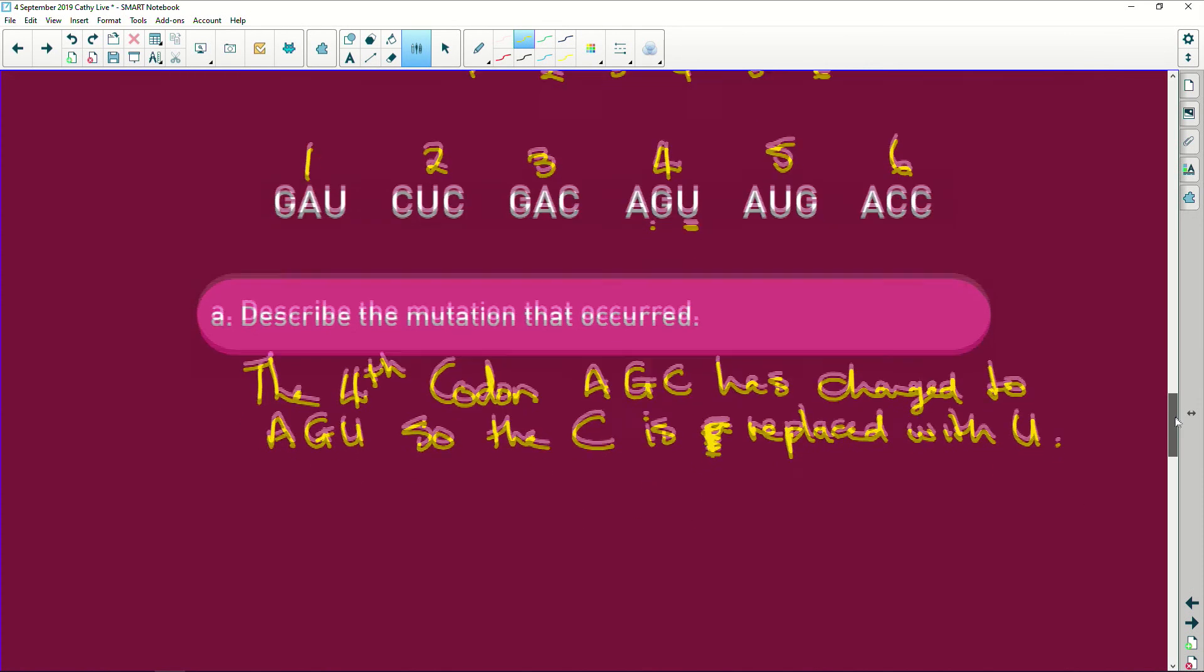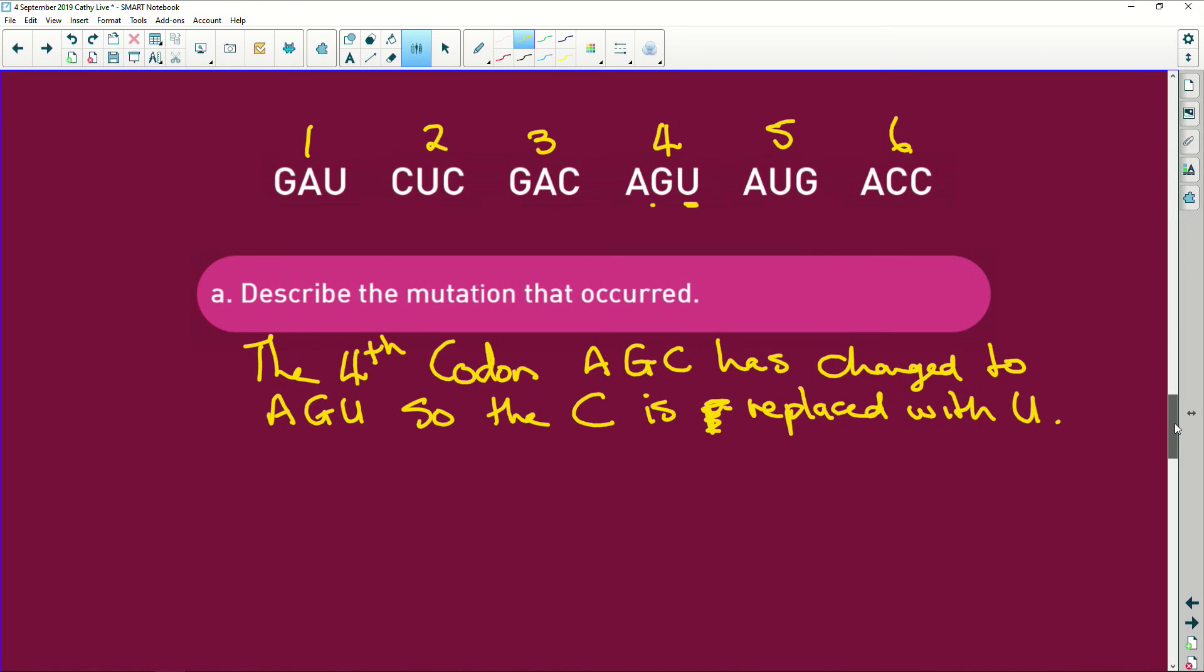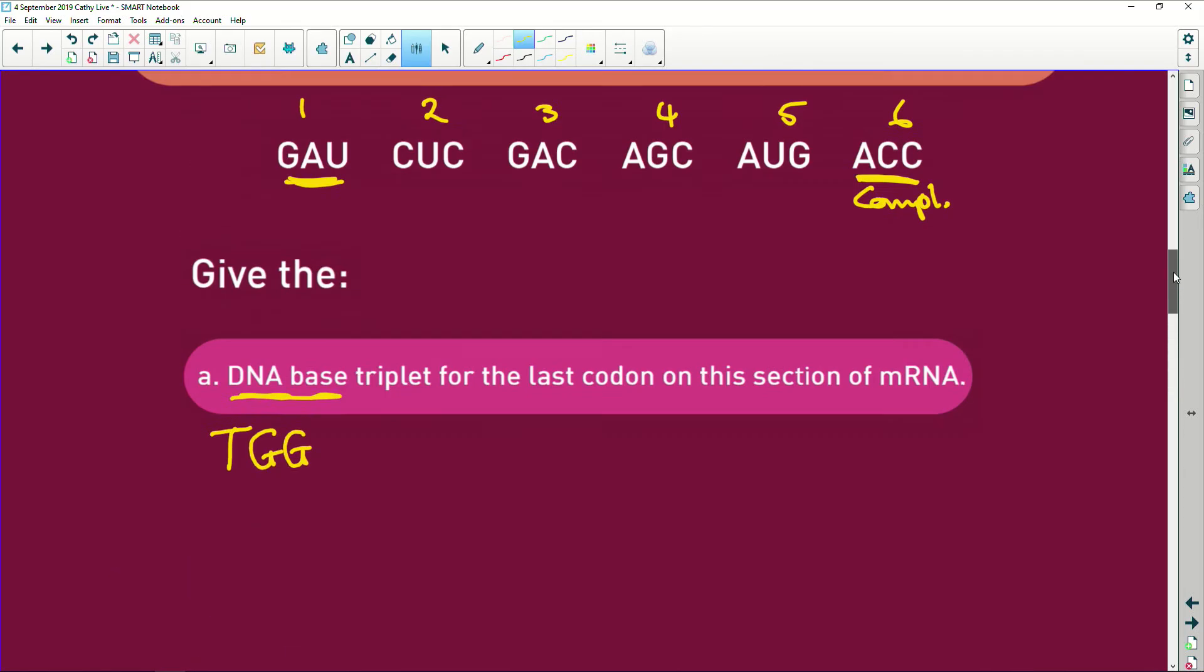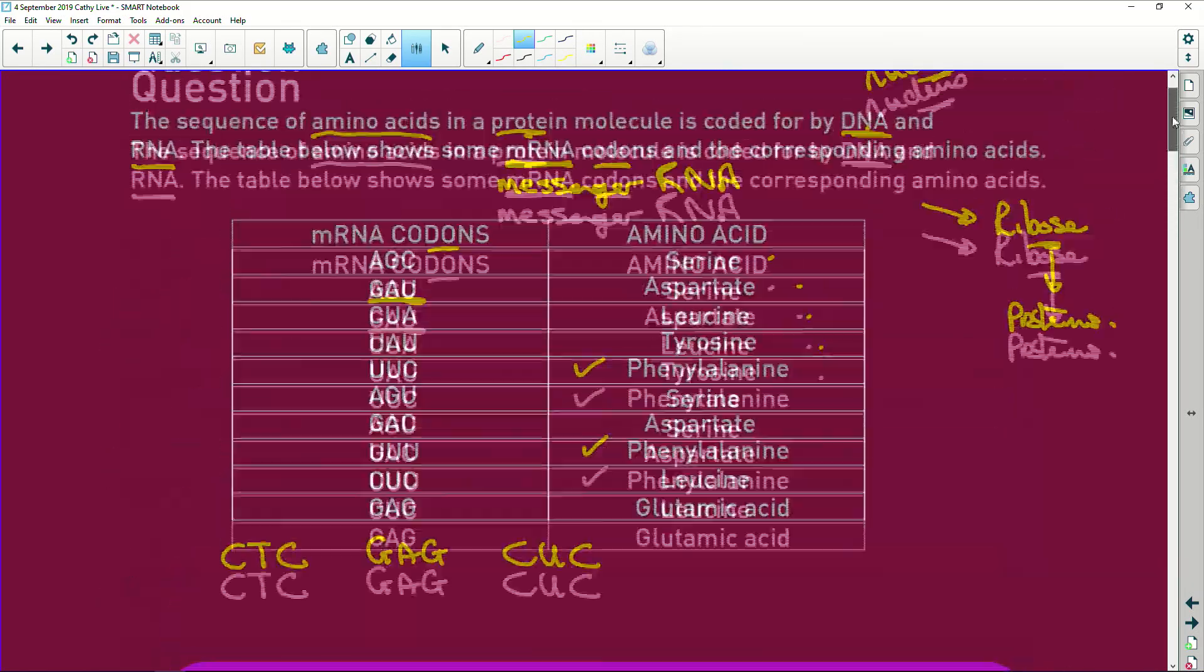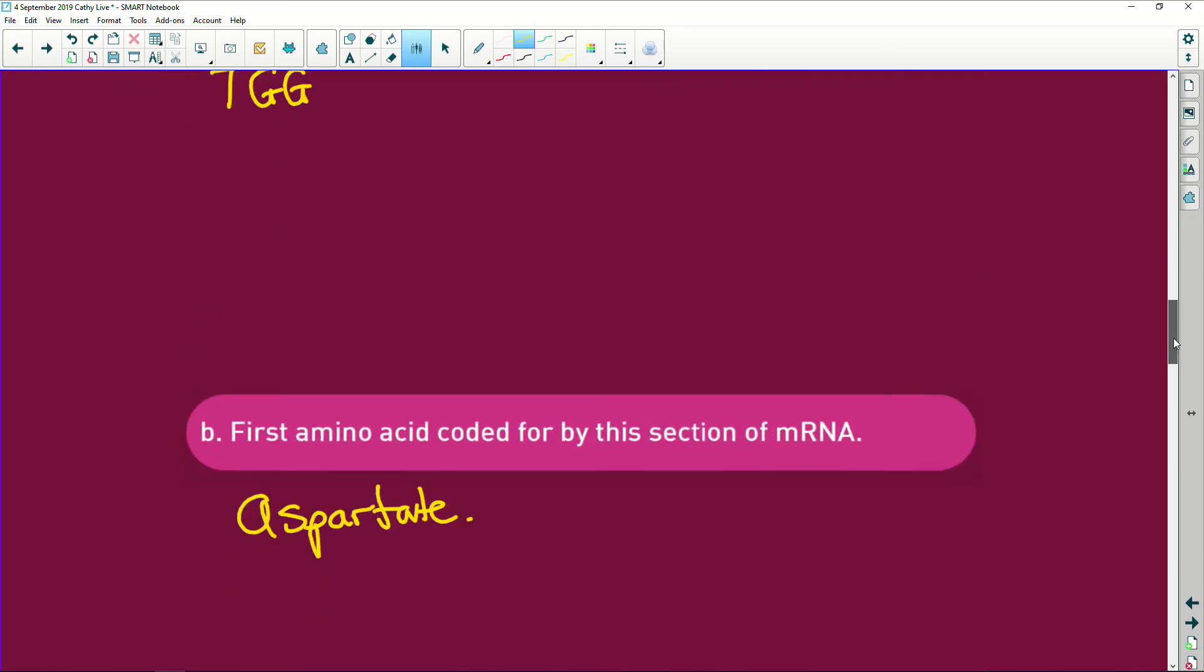It says explain the effect of that mutation that will have on a resulting protein. So we're looking for AGC and AGU. So we go back here: ACG and ACU—is AGC, and we want AGU. Oh look, they're both serine. So if they code for the same amino acid, they're going to make absolutely no difference to the resulting protein.